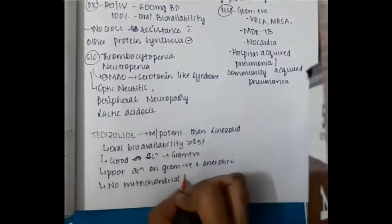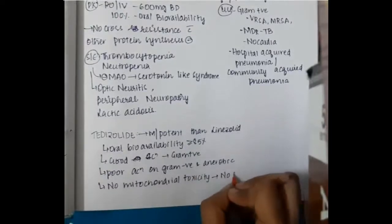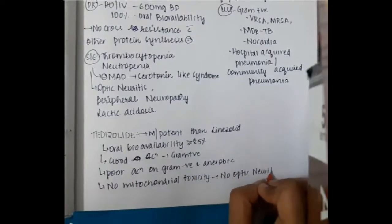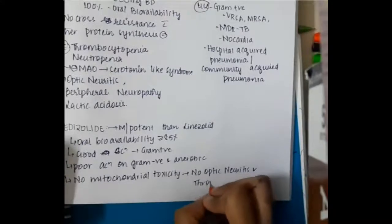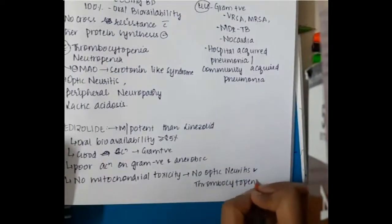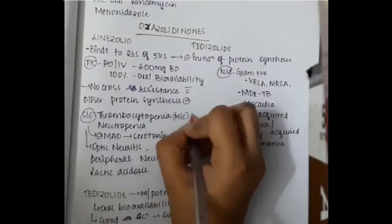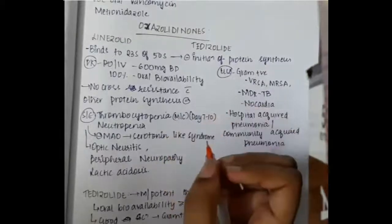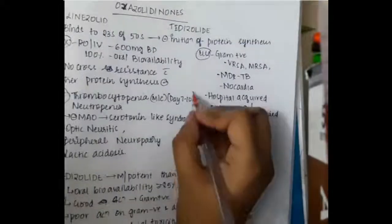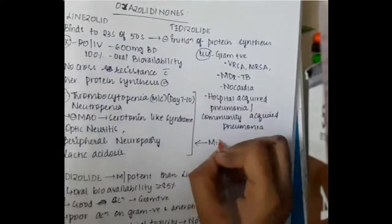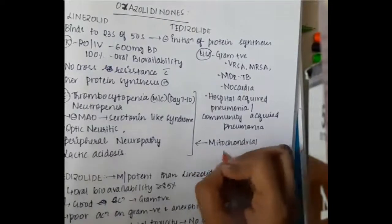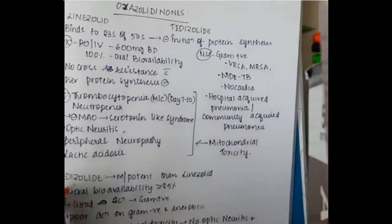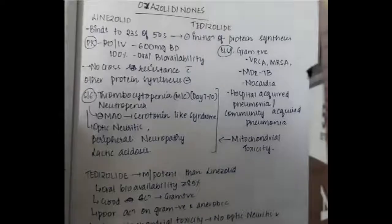Tedizolid has no mitochondrial toxicity, does not cause optic neuritis or thrombocytopenia. All these toxicities of linezolid mainly occur due to mitochondrial toxicity.